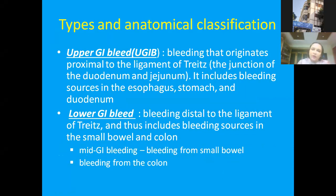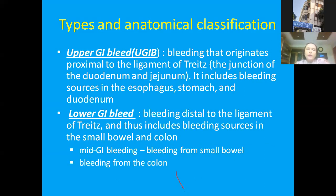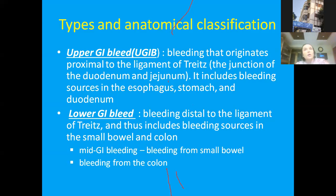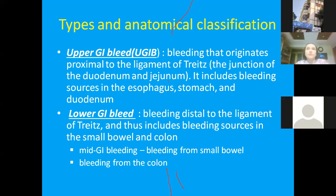Let's start with the types and anatomical classification. Upper gastrointestinal bleeding refers to bleeding that originates proximal to the ligament of Treitz, which is the junction of the duodenum and jejunum. It includes bleeding from the esophagus, stomach, and duodenum. But keep in mind that bleeding from above the esophagus — such as the posterior wall of the throat or posterior nasal cavity — can also manifest as upper GI bleeding.